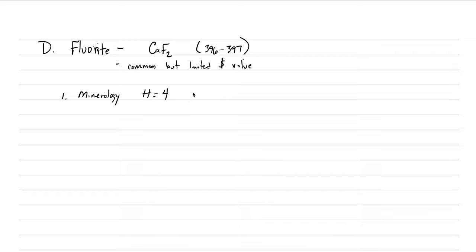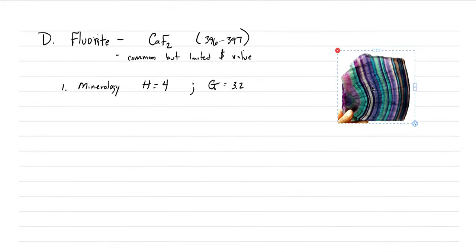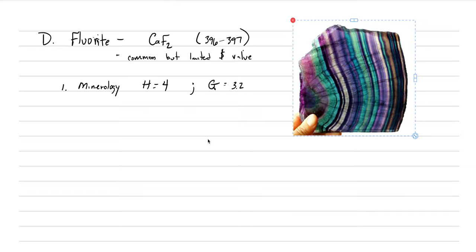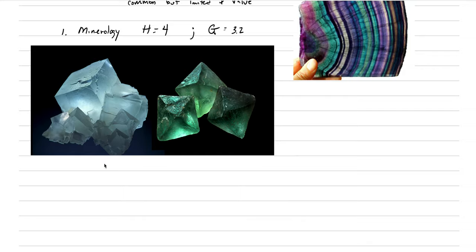The mineralogy of fluorite: it has a hardness of 4, so it's harder than many minerals we've discussed, and a specific gravity of about 3.2, making it denser than many other clear minerals. These are two very important parameters for identifying fluorite in labs. Because it can occur in any color, color cannot be used as a diagnostic property — instead we look at how it crystallizes, and it crystallizes as cubes.